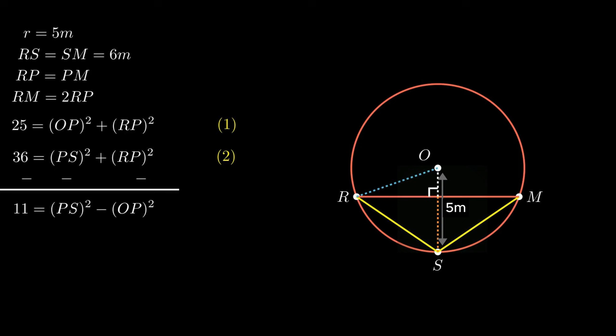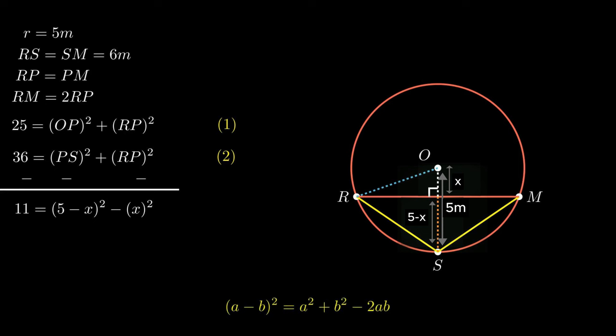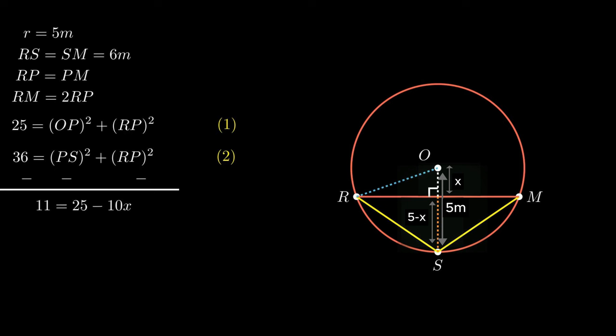Let us assume segment OP as x, so segment PS becomes 5 − x. On substitution: 11 = (5 − x)² − x². Using the identity (a − b)² = a² + b² − 2ab, we get: 11 = 25 + x² − 10x − x². Since positive x² and negative x² cancel out, the equation becomes: 11 = 25 − 10x.